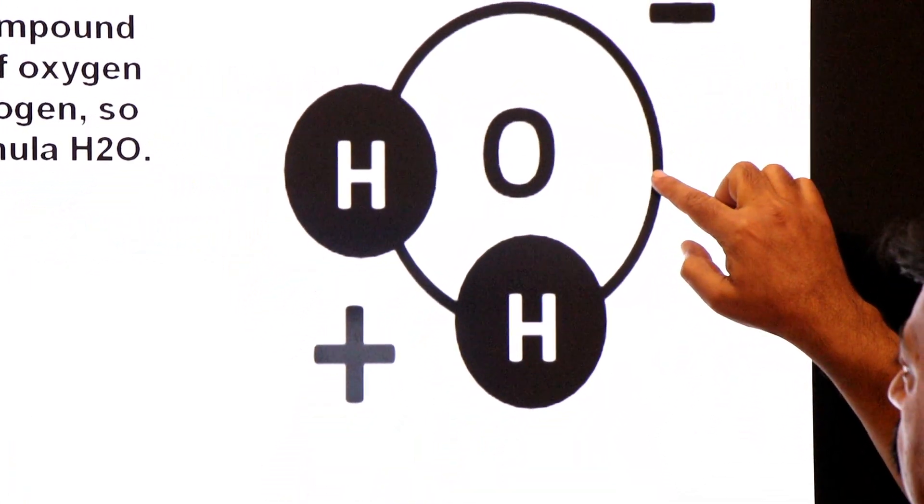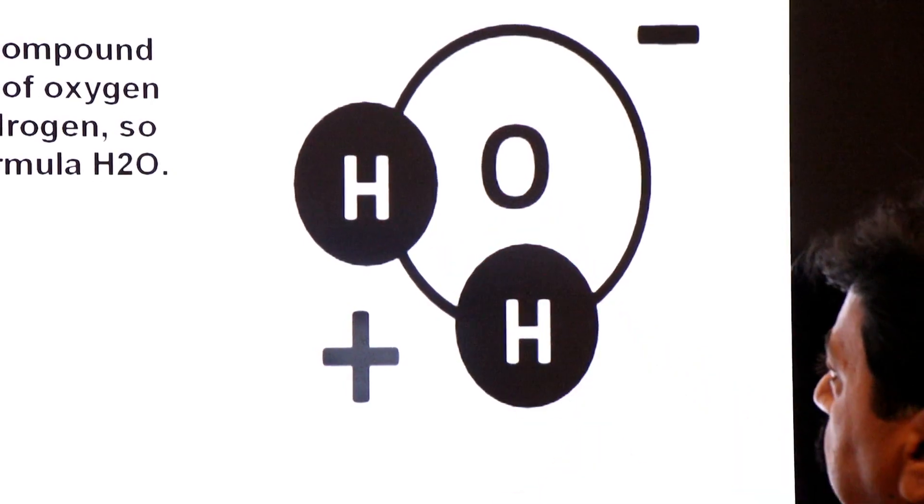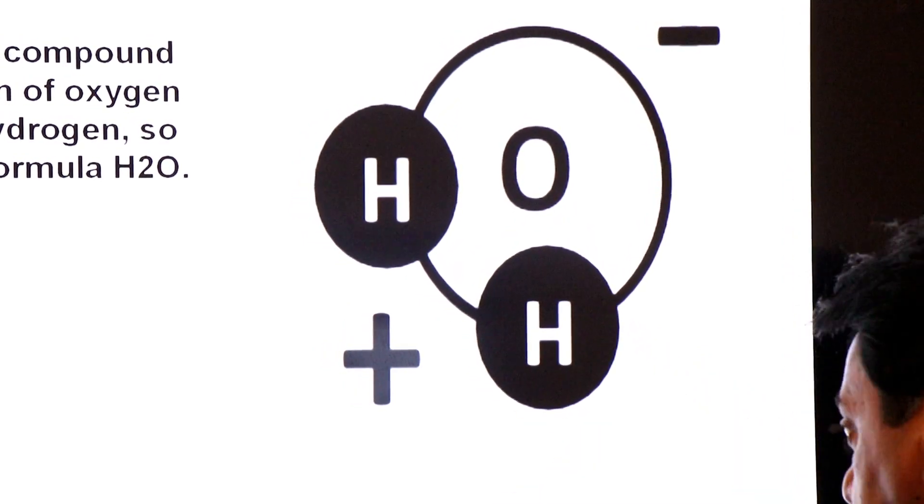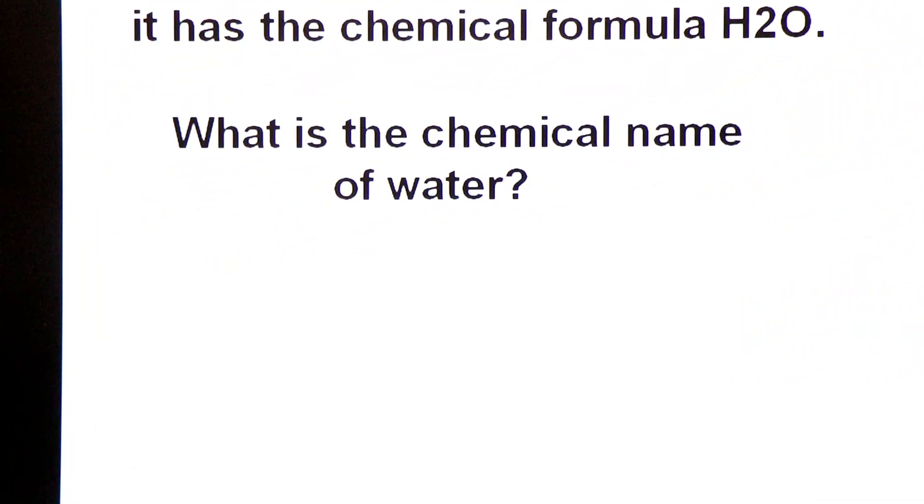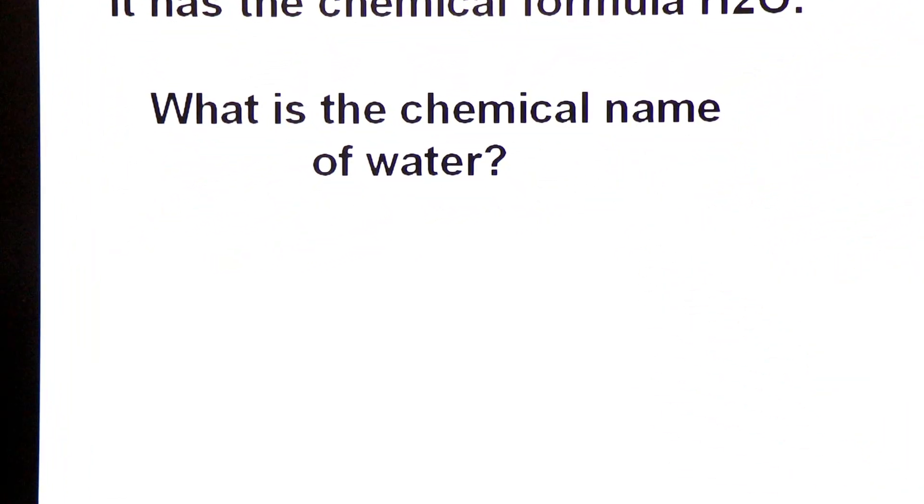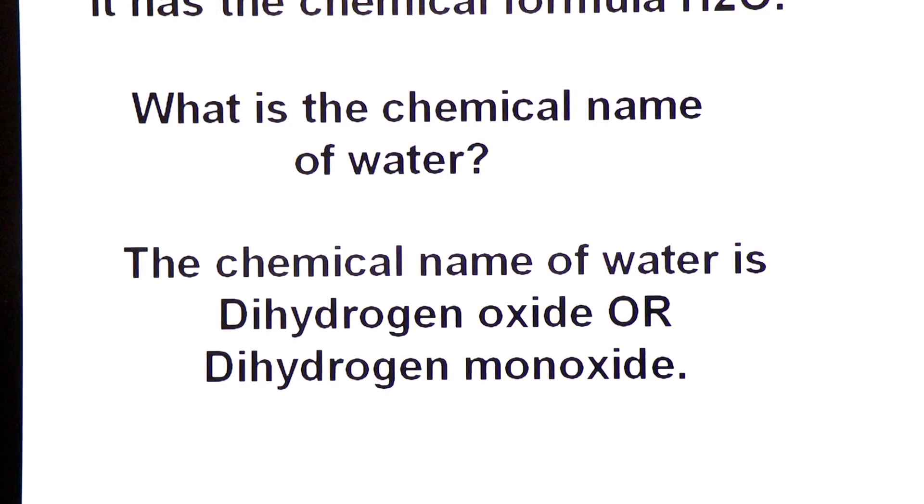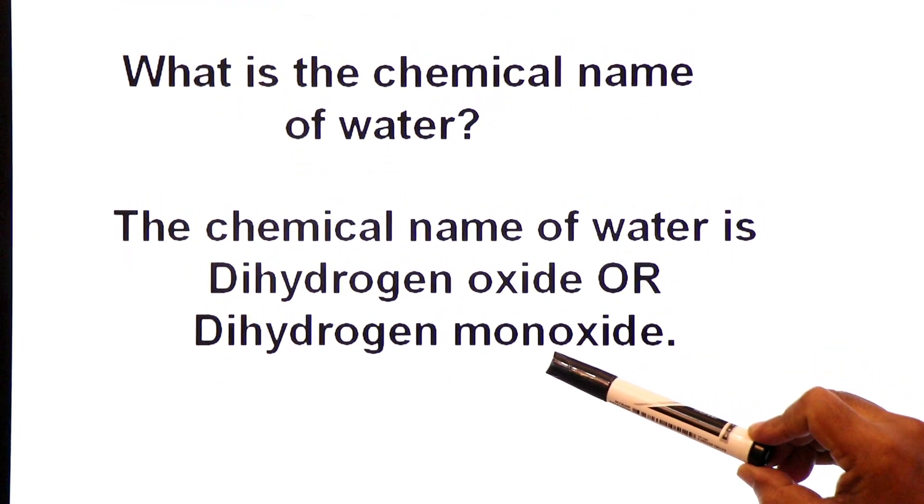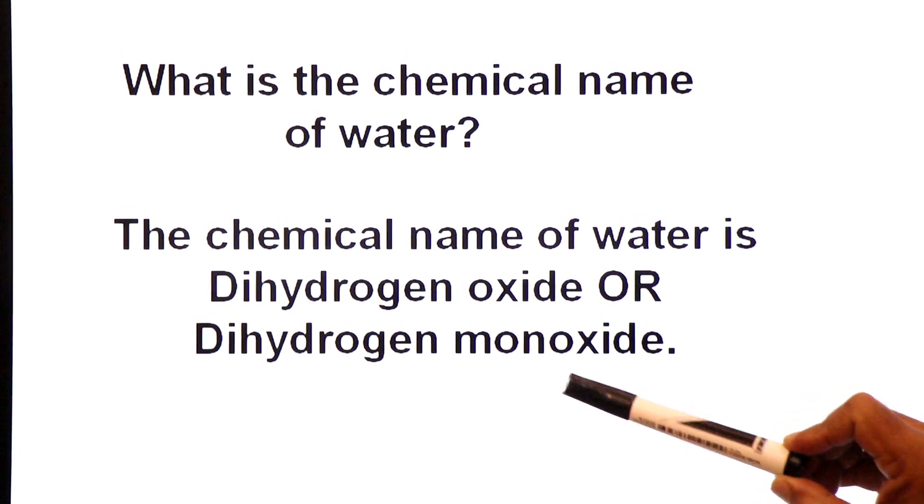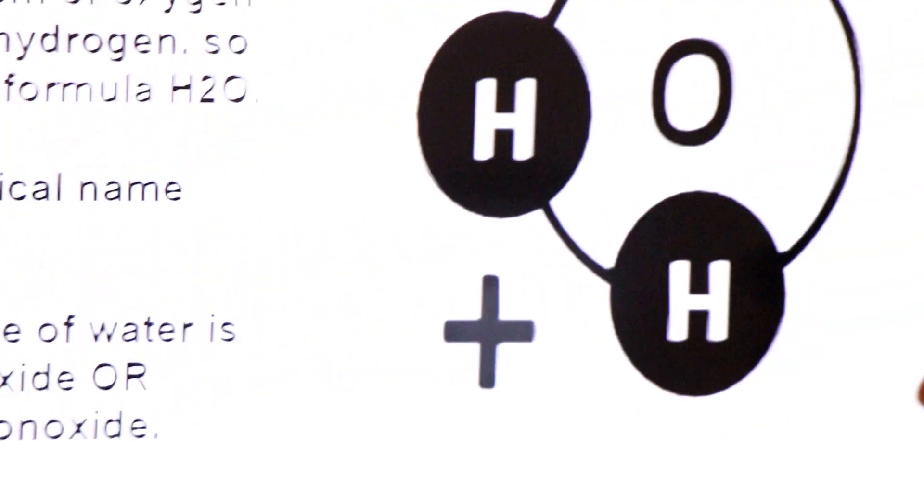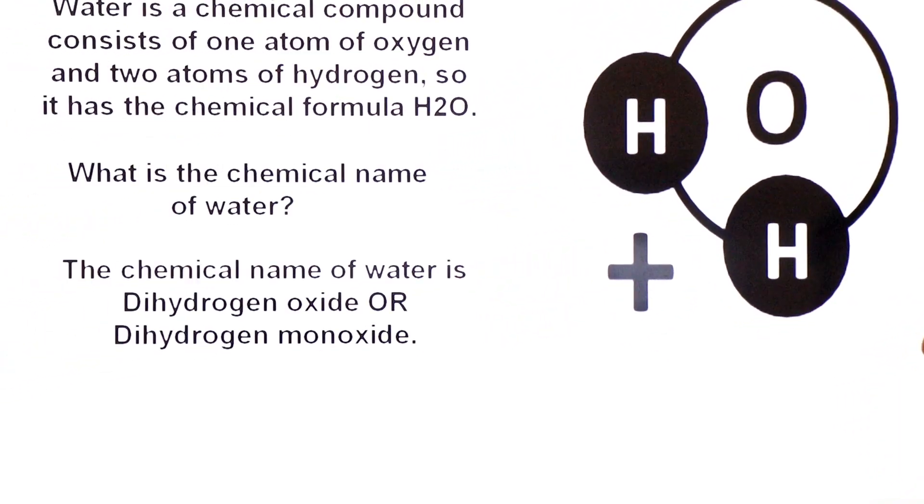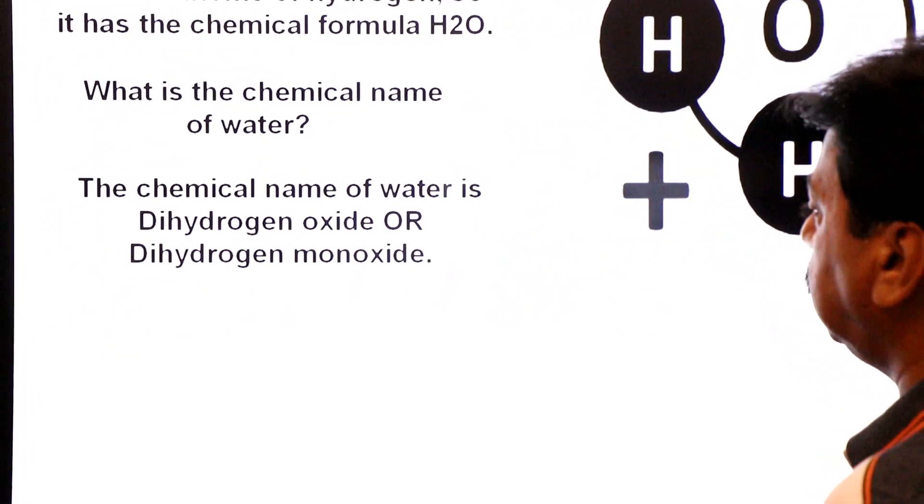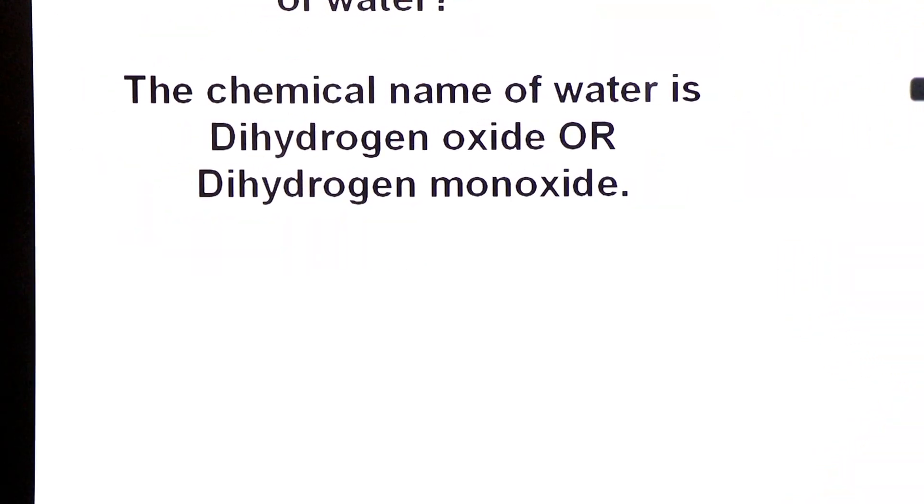Water ka formula hai H2O jis mein ek oxygen covalently bonded hoti hai two hydrogen atoms se. Now what is the chemical name of water? Dear students, the chemical name of water is dihydrogen oxide or dihydrogen monoxide.